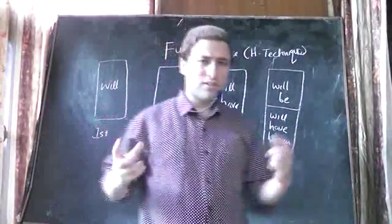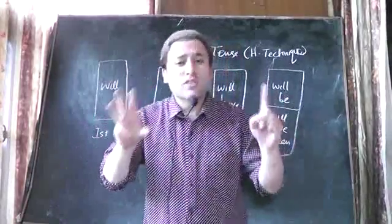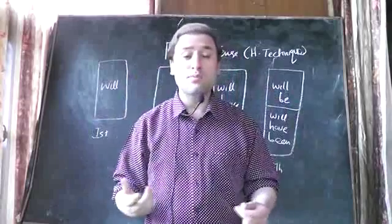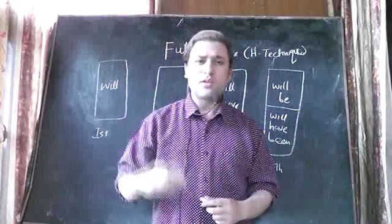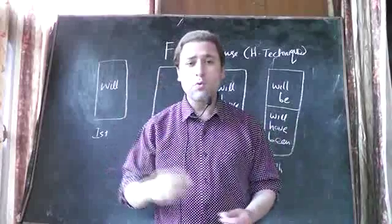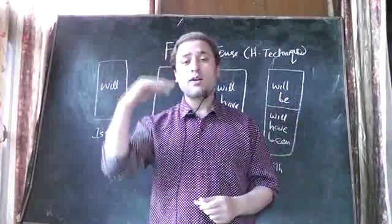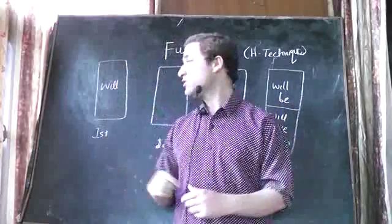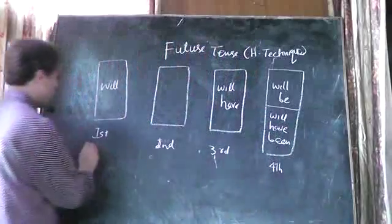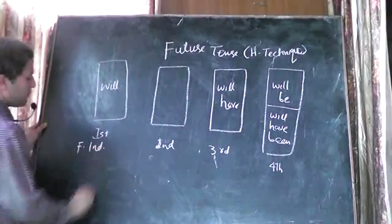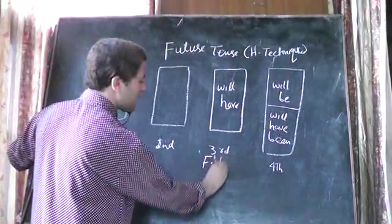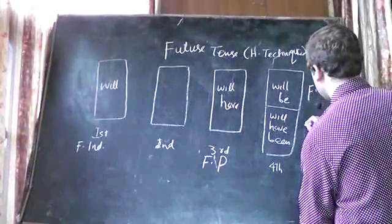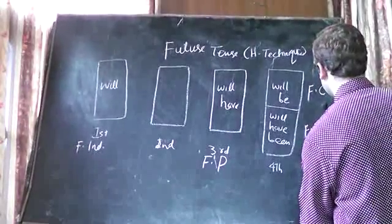Let's evaluate first. How many boxes did we make? We made four boxes. The first box is filled with 'will', the second one is empty, the third one is filled with 'will have', and the fourth one is divided into two parts: upper is 'will be' and lower is 'will have been'. Now let's name the boxes: the first box is Future Indefinite, the third is Future Perfect, and the fourth is Future Perfect Continuous.